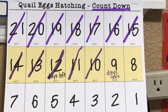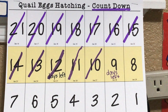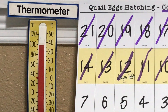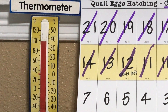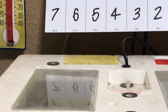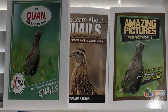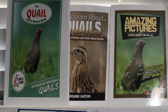Today we have nine days left until our bobwhite quail are likely to hatch. Quail can take anywhere from 21 to 24 days to hatch, but the man who owns the parents of these quail knows his quail almost always take exactly 21 days, so that's what we're basing it on. We've made sure our thermometer inside the incubator is set really close to 100 degrees Fahrenheit.